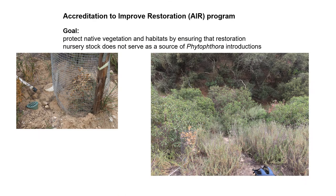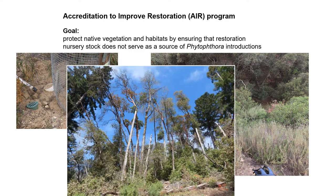The program involved — the Accreditation to Improve Restoration program — has the overall goal to protect native vegetation and habitats by making sure that we aren't introducing Phytophthora in plantings that can work their way down into the native vegetation. We do not restore an area if we introduce these destructive pathogens that can kill both native vegetation that was on the site as well as the plantings themselves.